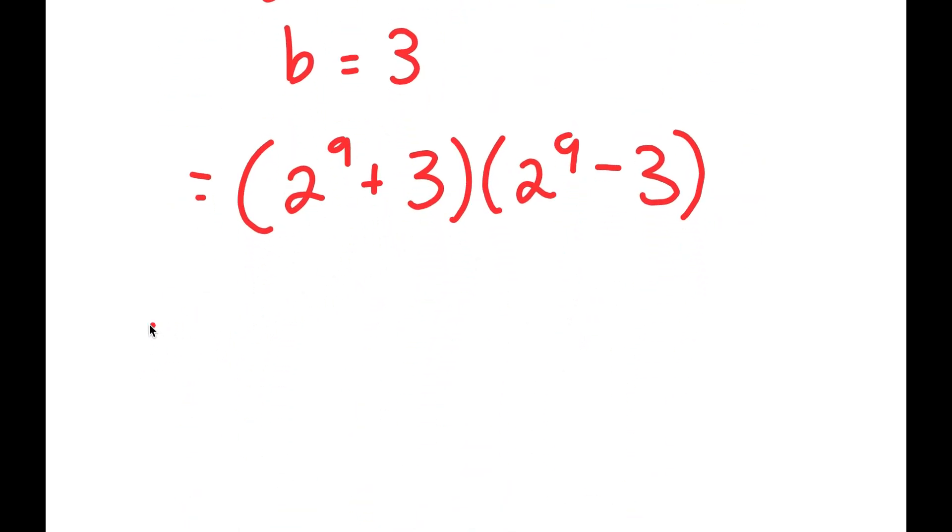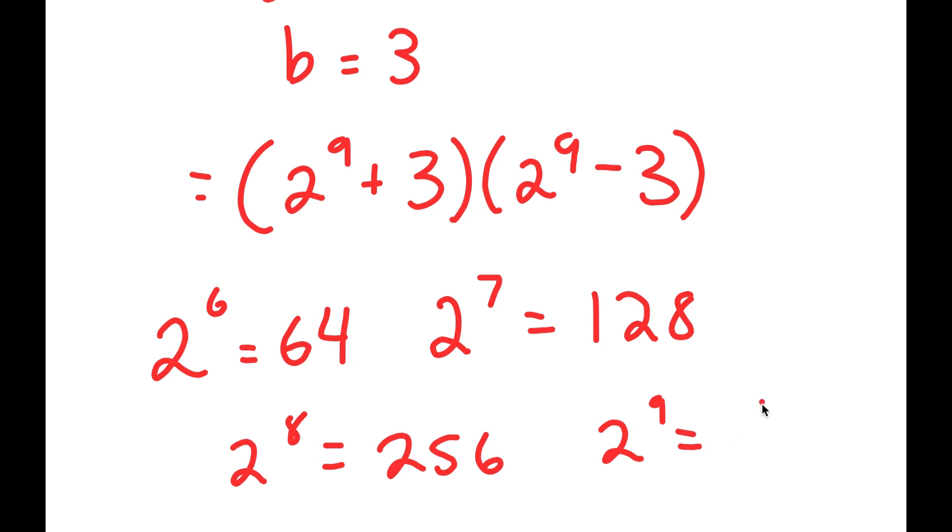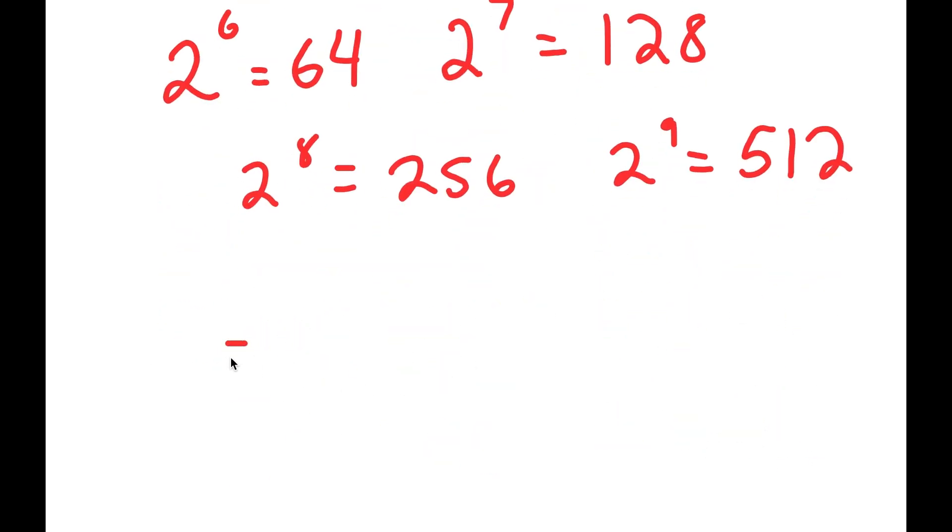And 2 to the power of 9, well, 2 to the power of 6 is equal to 64. 2 to the power of 7 is double of 2 to the power of 6, so it's 128. 2 to the power of 8 is double of 2 to the power of 7, so it's 256. And 2 to the power of 9 is 512. So I have 512 plus 3 times 512 minus 3.